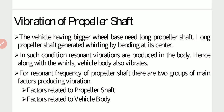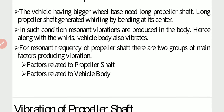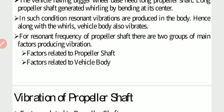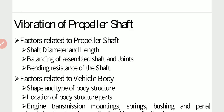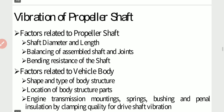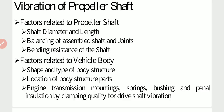Vibration of propeller shaft: vehicles with a larger wheelbase need a long propeller shaft. A long propeller shaft generates whirling by bending at its center, and resonant vibrations are produced in the body. For the resonant frequency of the propeller shaft, there are two groups of main factors. Factors related to propeller shaft: shaft diameter to length ratio, shaft diameter and length, balancing of the assembled shaft and joint, and bending resistance of the shaft. Factors related to vehicle body: shape and type of body structure, location of body structure parts, engine and transmission mounting, spring, bushing, panel insulation, and clamping quality.